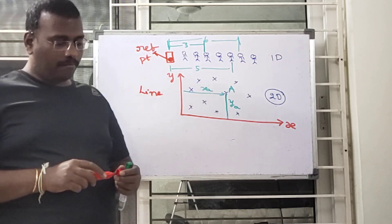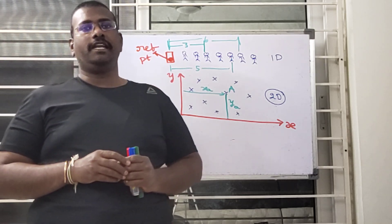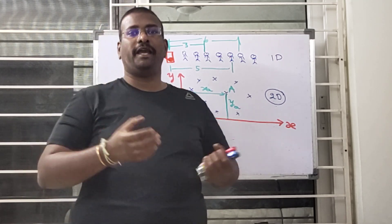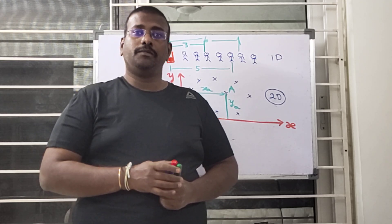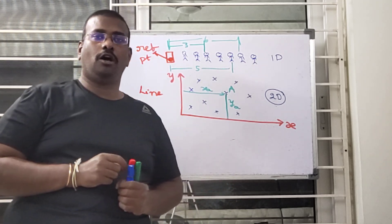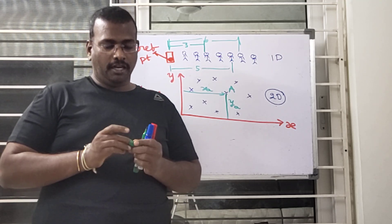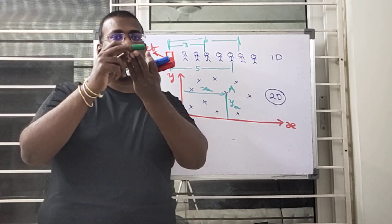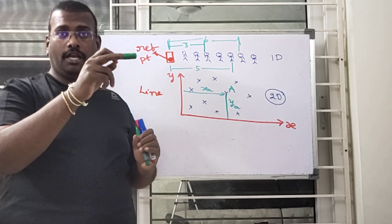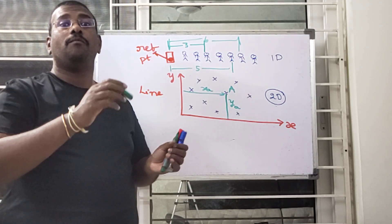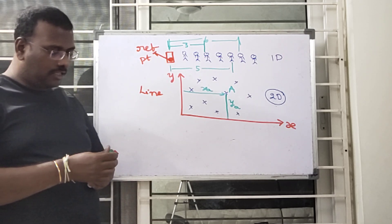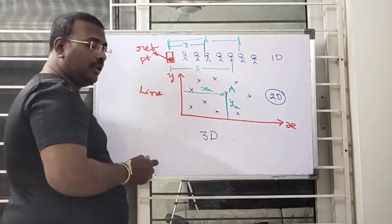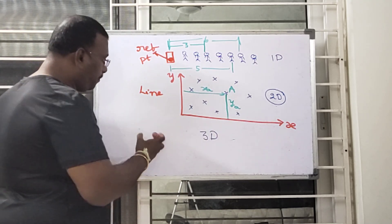Similarly, if a point or object is located in a space, how can we describe its position? Consider this object — it is some distance from the floor and some distance from the wall. Here we are taking the references as planes. So once the object is present in a three-directional space, the reference is going to be a plane.